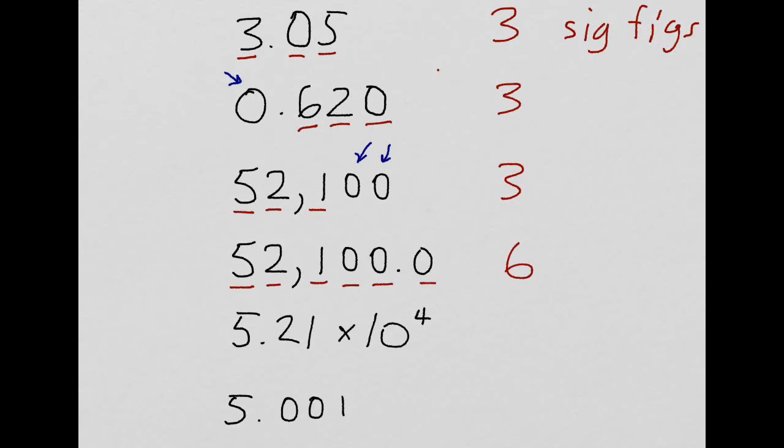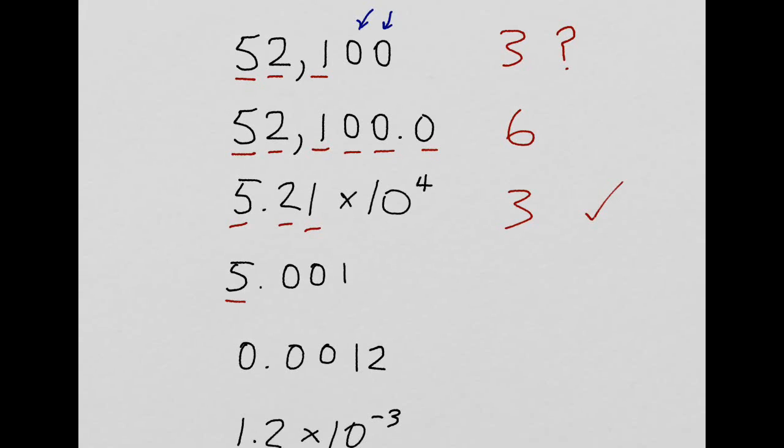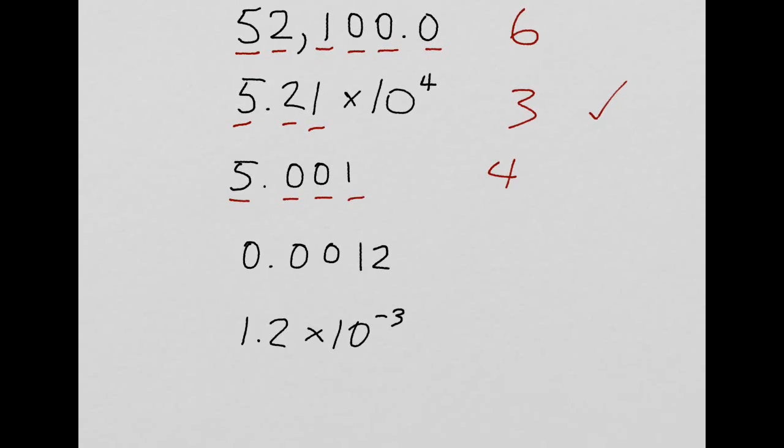This can be a bit ambiguous. So, a nice way to write 52,100 is 5.21 times 10 to the 4. This is very clearly 3 significant figures. Whereas with this one up here, we're not quite sure whether those last two 0's are significant or not. 5.001, this is significant. This is, this is, and this is. So, that's 4 significant figures. 0.0012, only the 1 and the 2 are significant, whereas these ones all seem to be placeholders. So, this is just 2 significant figures. And a better way, perhaps to write that as 1.2 times 10 to the minus 3. Same number, but clearly, you can see here, this has 2 significant figures.